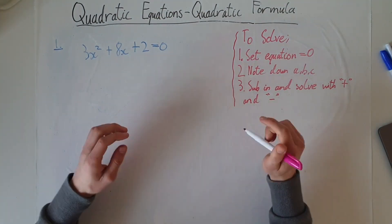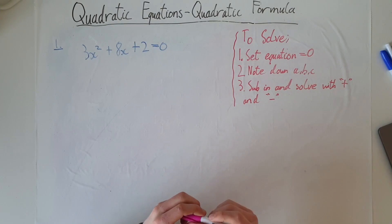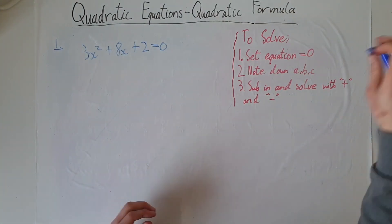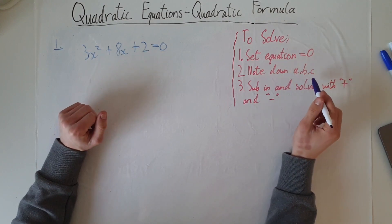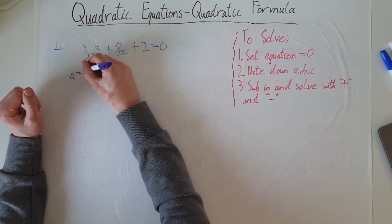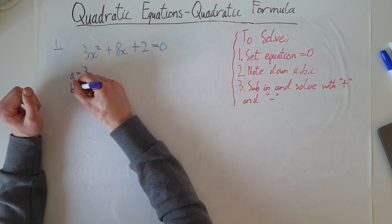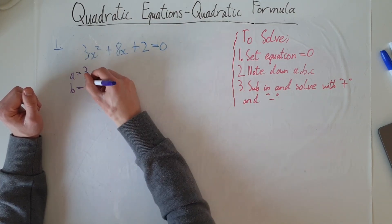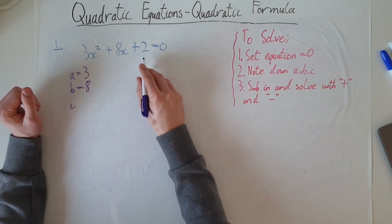As I said, set the equation equal to 0, which we've done. And now note down a, b, and c. So it's already equal to 0, so a reading off is 3, b is equal to 8, and c is equal to 2.